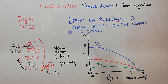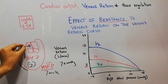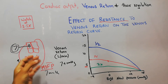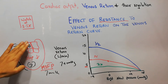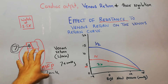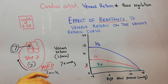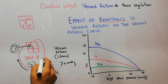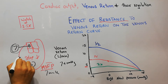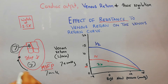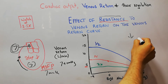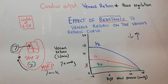Now, there is some resistance in the veins, arteries, and arterioles which is trying to stop blood flow towards the heart — something we discussed in detail in our last lecture. What will happen if the amount of that resistance increases or decreases? What will happen to the venous return?